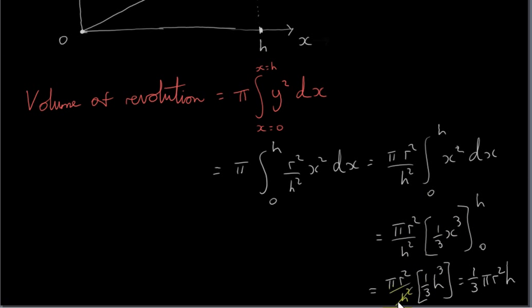H squared divides into H cubed to give H. So we have π R squared H over 3, or 1 third π R squared H, which is the familiar formula for the volume of a cone.